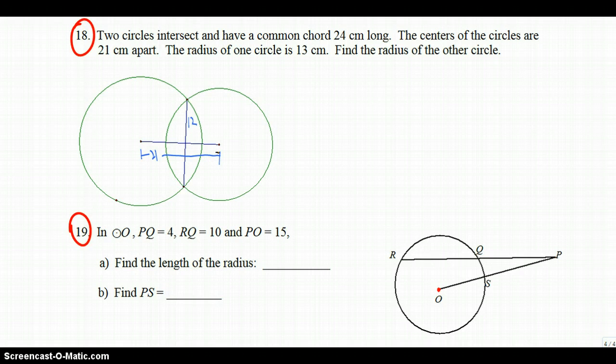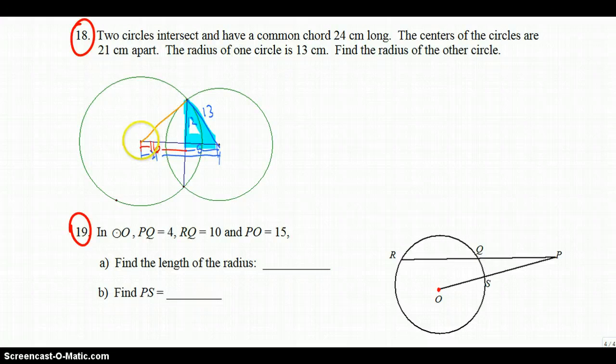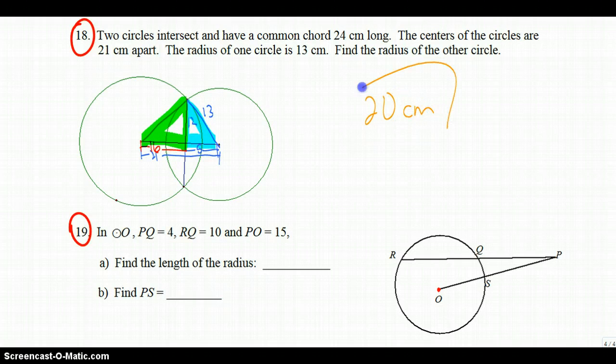And the radius of one of the circles is 13 centimeters. So if I draw in that segment, it creates a right triangle. And this is a Pythagorean triple, 5, 12, 13. So this length is going to be equal to 5, which means that there are 16 centimeters left for that length. And then it gives us another triangle when we draw in this radius. So in this other right triangle, we have lengths of 12, 16. And this is a variation of a 3, 4, 5 right triangle, 12 squared plus 16 squared equals 20 squared. So the radius of this other circle is 20 centimeters.